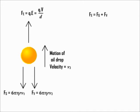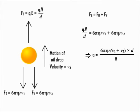Fe = Fg + Fv, where Fv = 6πηrv2 and Fg is 6πηrv1. Therefore, Q·V/D = 6πηrv1 + 6πηrv2, which implies Q = 6πηr(v1 + v2)D/V. So, in either case, Q can be calculated.